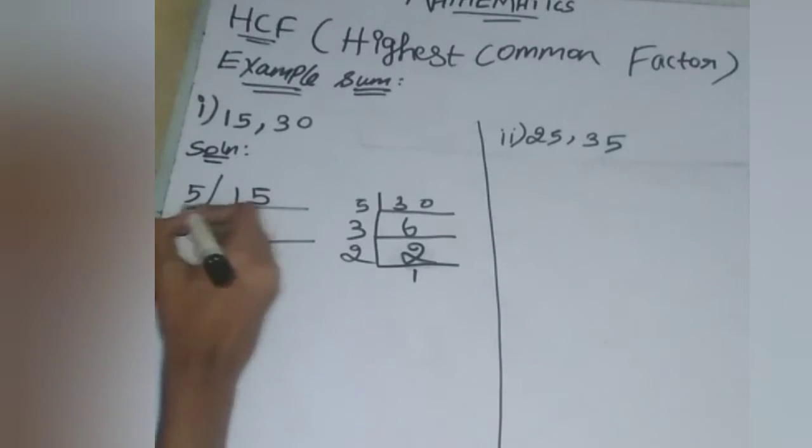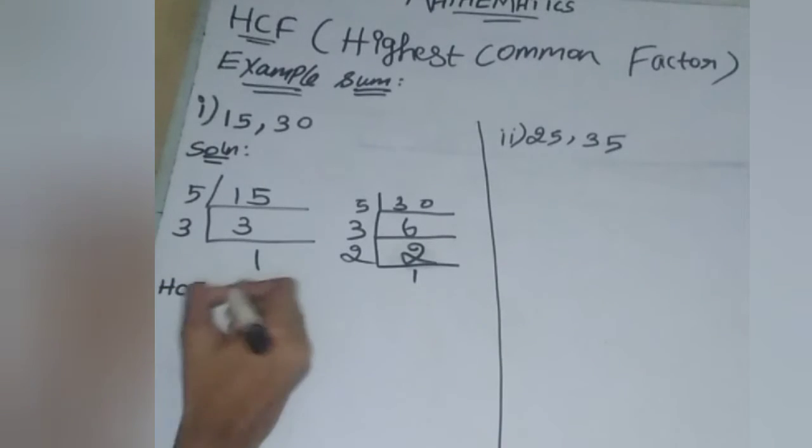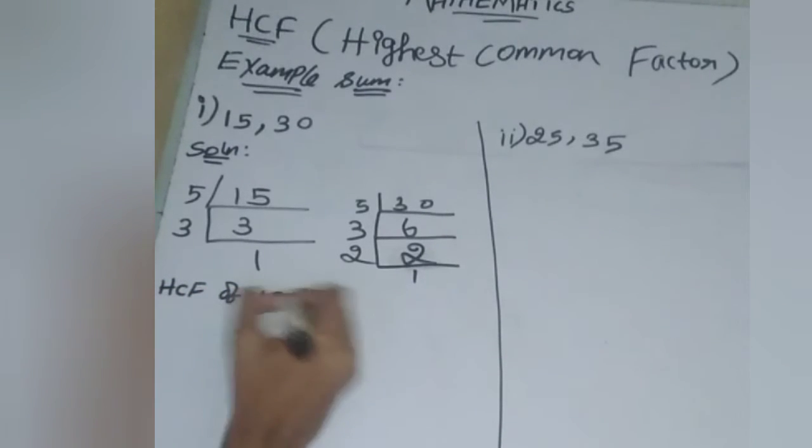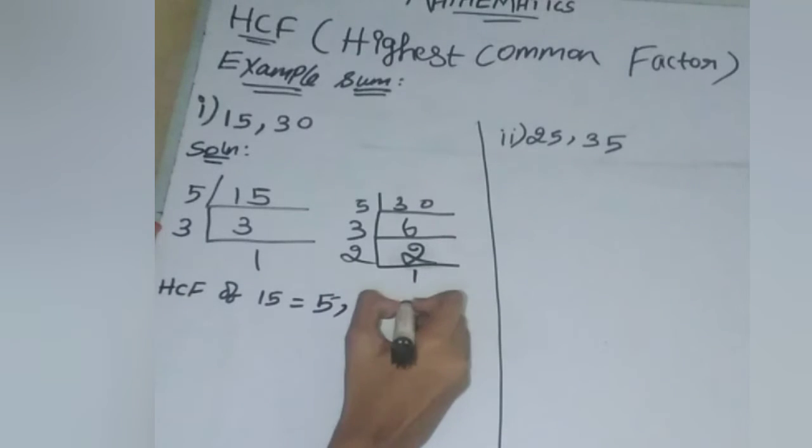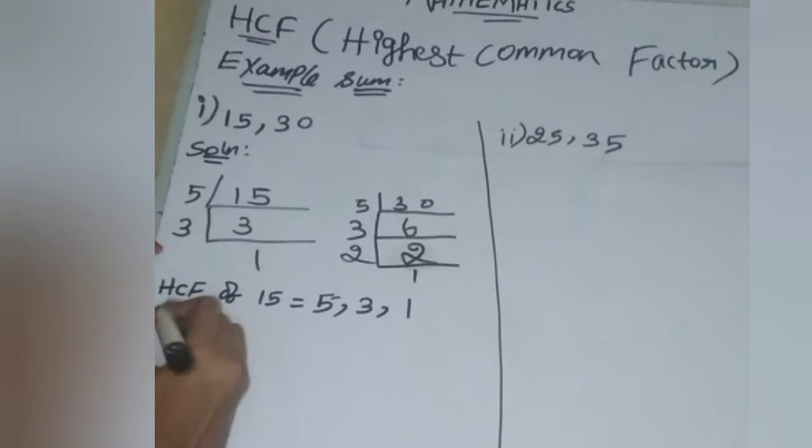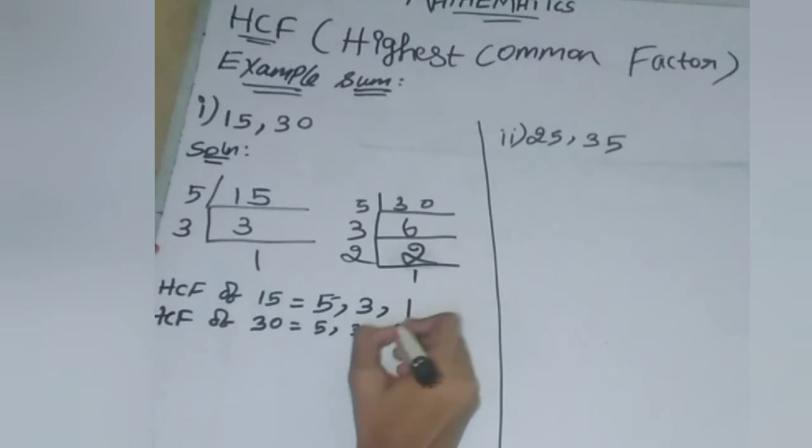So, the factors of 15 are 5, 3, and 1. The factors of 30 are 5, 3, 2, and 1.